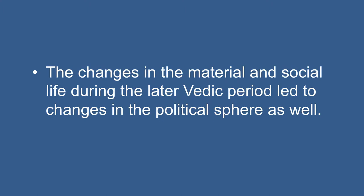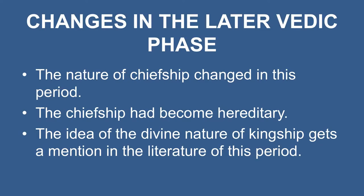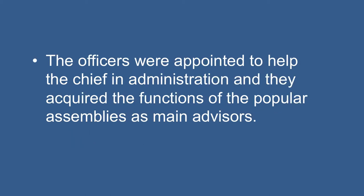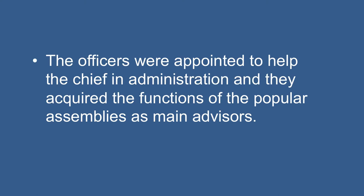These situations changed during the later Vedic phase. Changes in material and social life led to changes in the political sphere as well. The nature of chiefship changed: the territorial idea gained ground, people started to lose their control over the chief, and the popular assemblies gradually disappeared. Chiefship had become hereditary, and the idea of the divine nature of kingship gets a mention in the literature of this period. The Brahmans helped the chief through elaborate coronation rituals such as Vajapeya and Rajasuya to establish the chief's authority. Officers were appointed to help the chief in administration, and a rudimentary army emerged as an important element of the political structure. All these lived on taxes called Bali, Shulka, and Bhaga offered by the people.